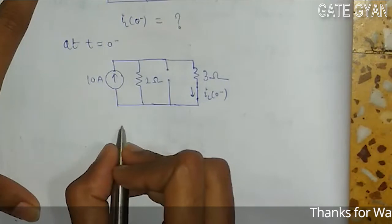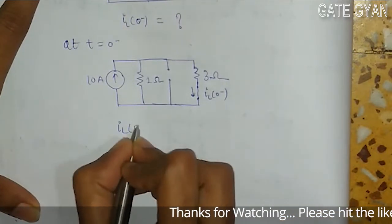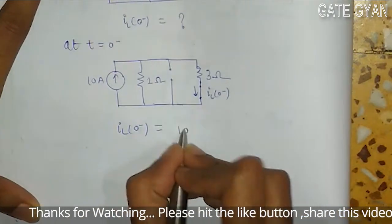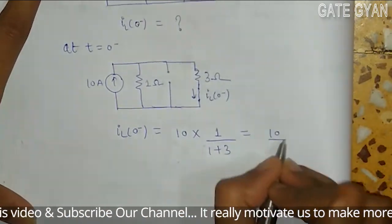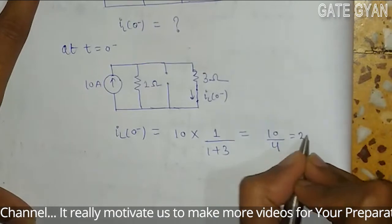It is going to be iL(0-) = 10 × 1 / (1 + 3), that is going to be 10/4, 2.5 ampere.